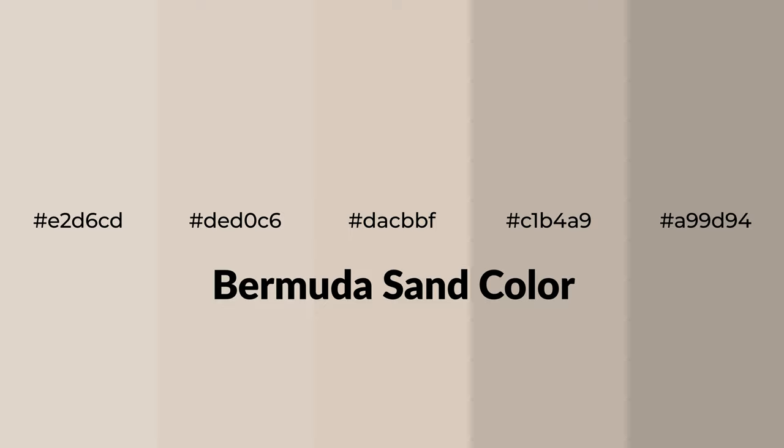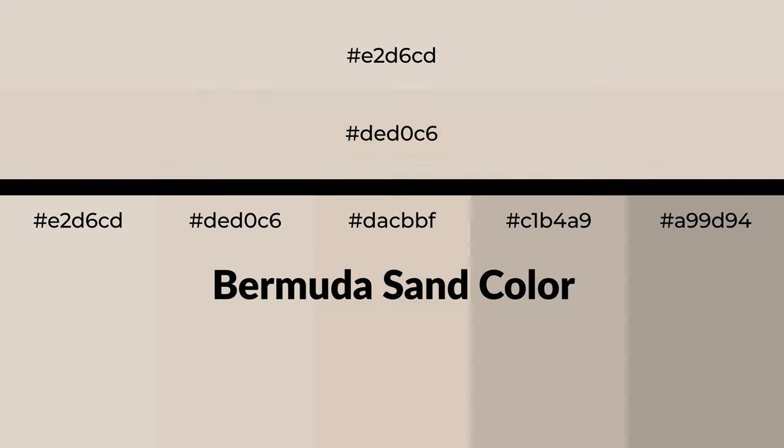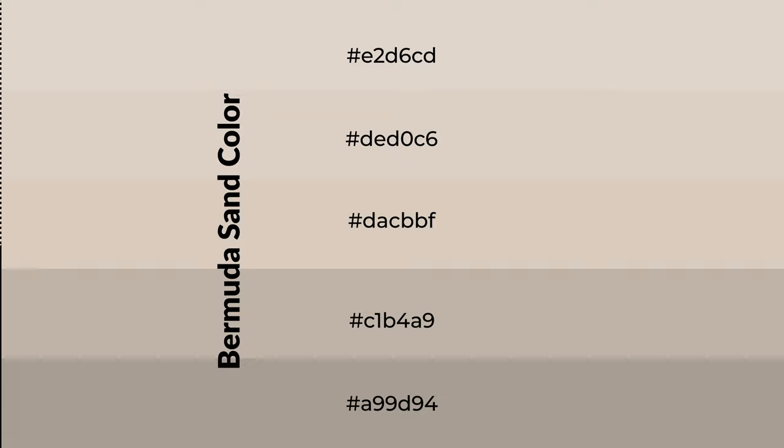Warm shades of Bermuda sand color with orange hue for your next project. To generate tints of a color, we add white to the color — tints create light and exquisite emotions. To generate shades of a color, we add black to the color, and it is used in patterns, 3D effects, and layers. Shades create depth and drama.